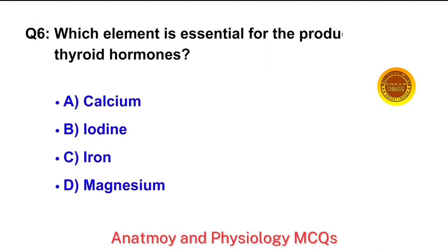Question No. 6. Which element is essential for the production of thyroid hormones? The right answer is option B: Iodine.